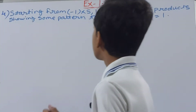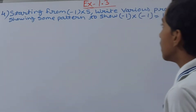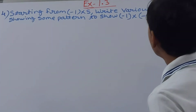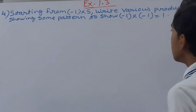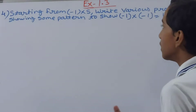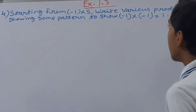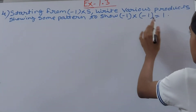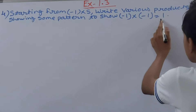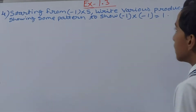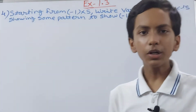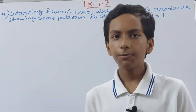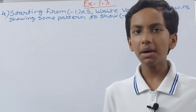This question says: starting from -1 × 5, write various products showing some pattern to show that -1 × (-1) = 1. What we have to do is start making patterns from -1 × 5.